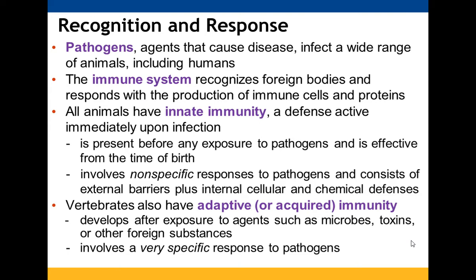The immune system is able to recognize the majority of these foreign bodies and provide immune cells to help protect us. All animals are born with innate immunity, which is present before exposure to anything — it's present from birth. Vertebrates also have adaptive or acquired immunity, which we obtain when exposed to agents like bacteria, viruses, or microbes.